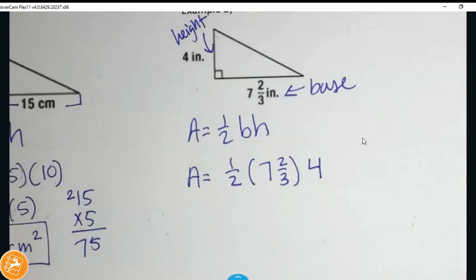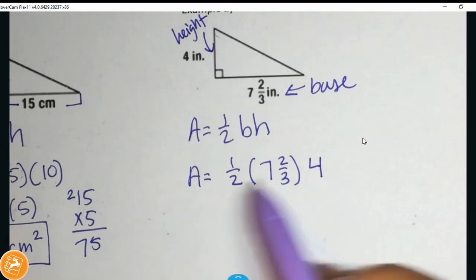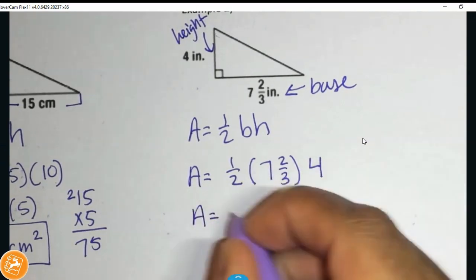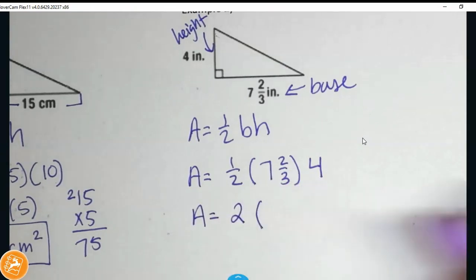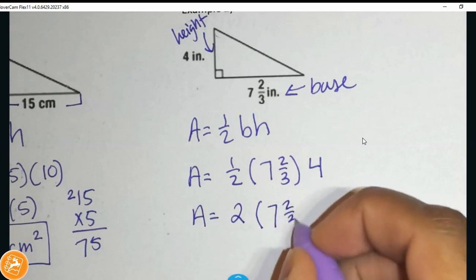Now, I know one half of 4 very quickly, so I'm going to go ahead and work it out. So, I'm going to do one half of 4. Area is equal to one half of 4. Then, 7 2/3 is what I have left over to multiply.